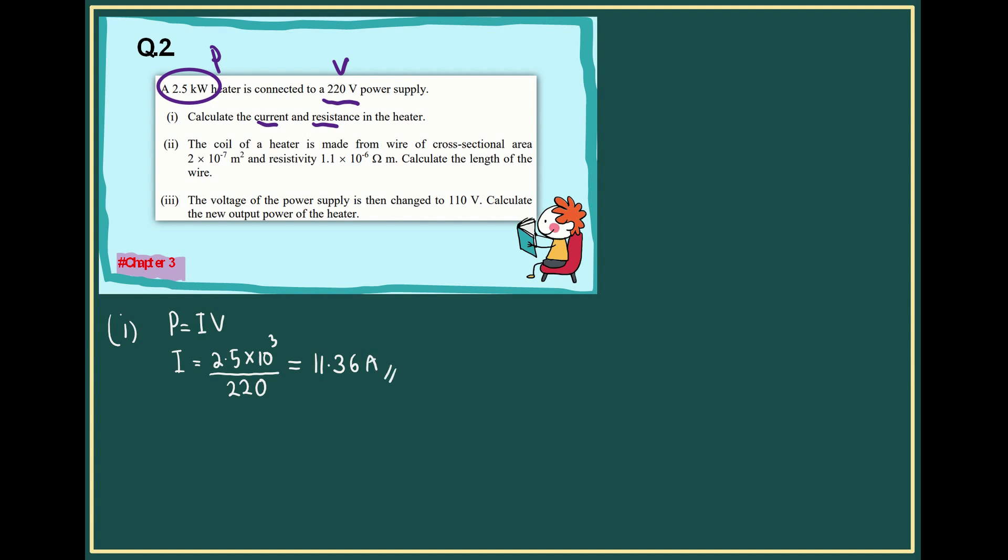To calculate the resistance, we are applying V = IR. So resistance R is V, 220, divided by I, 11.36. Then you're supposed to get 19.36 ohm. That's for the first question. The second question